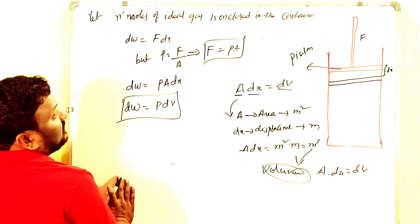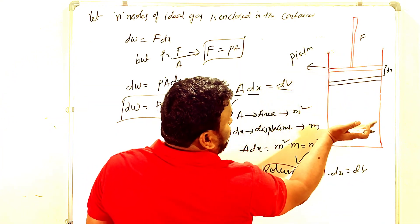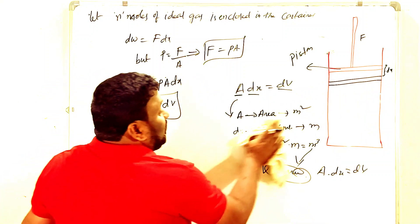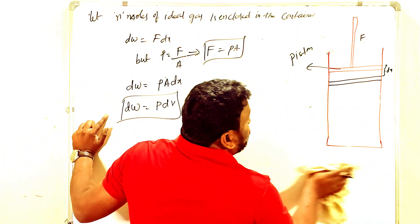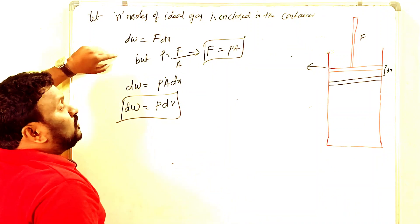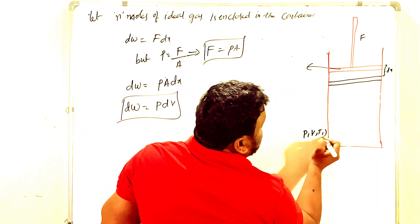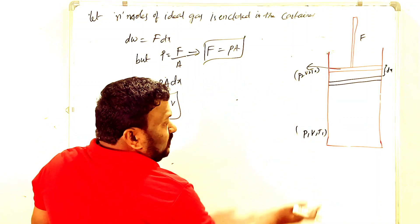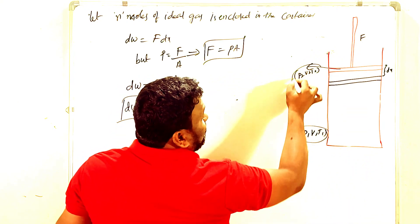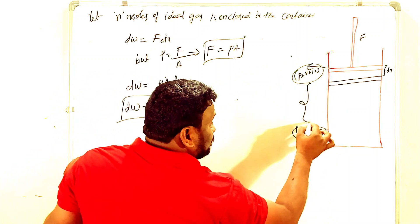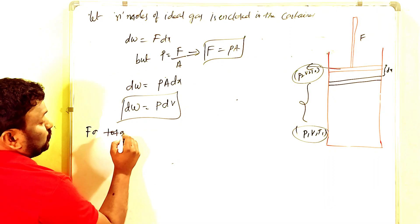If we want to move the piston from the initial state (P1, V1) to the final state (P2, V2), we need to find the total work done. For that, we have to integrate the equation on both sides. If the piston moves upward, volume increases; if it moves downward, volume decreases.